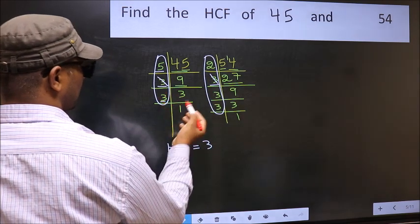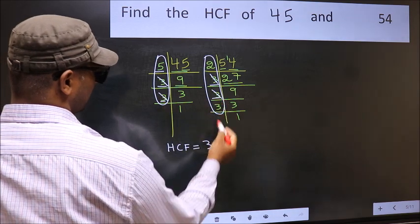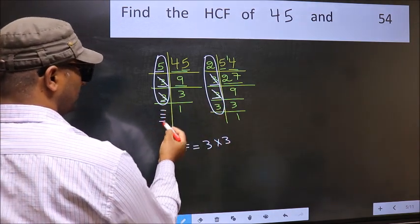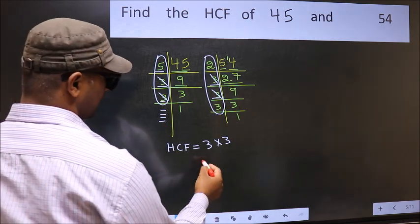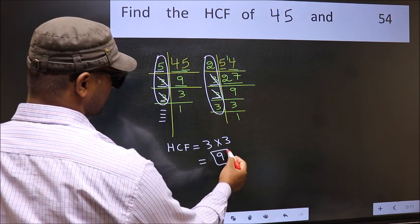Next number 3. Do we have 3 here? Yes. So cut 3 right here. No more numbers have been left out. So our HCF is 3 into 3. 9 is our HCF.